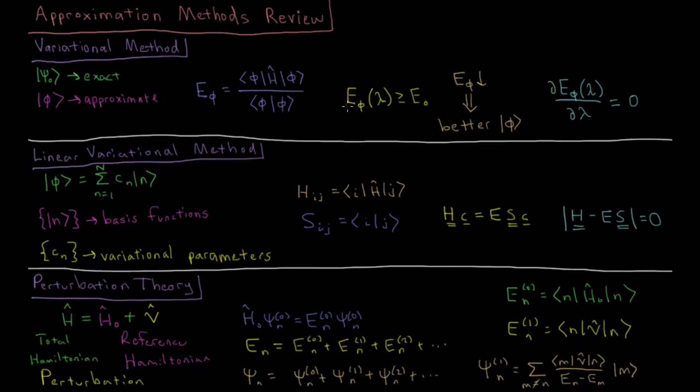Through the variational theorem we know that the energy of any approximate wave function, which we could say depends on some parameter lambda, is greater than or equal to the true ground state energy for this system. Note that this applies to ground states or the lowest energy solution only.